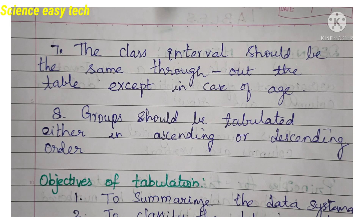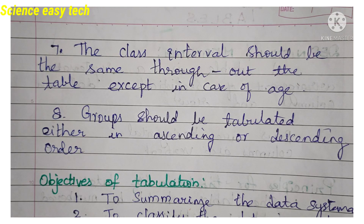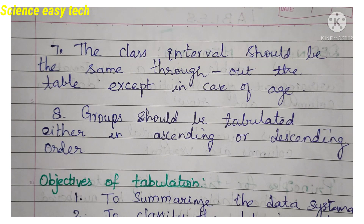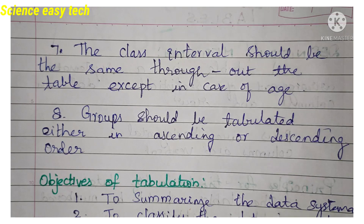Seventh point: the class interval should be the same throughout the table, except in the case of age. For example, intervals like 10–20, 20–30, 30–40, 40–50 maintain the same width. For age, you might use 'less than 20 years,' then 20–30, 30–40, 40–50, 50–60, and 'more than 60 years.' So the range for the last group may differ — you have to be very careful about this.